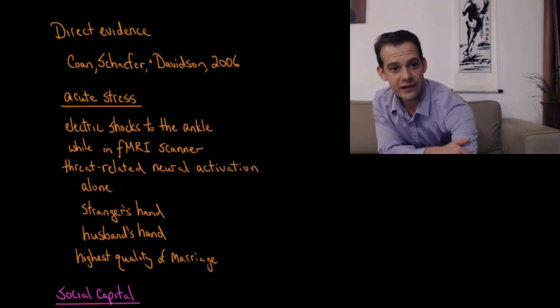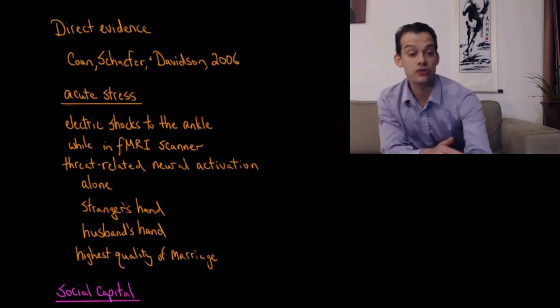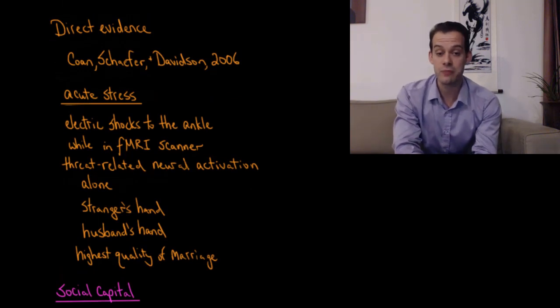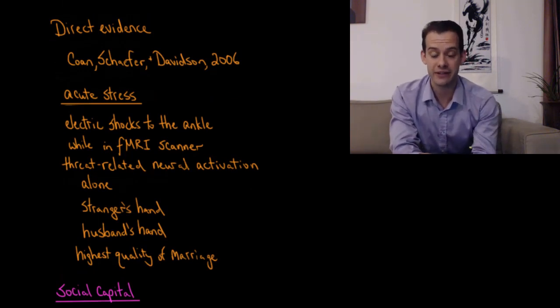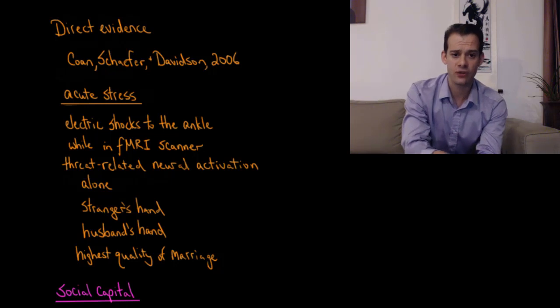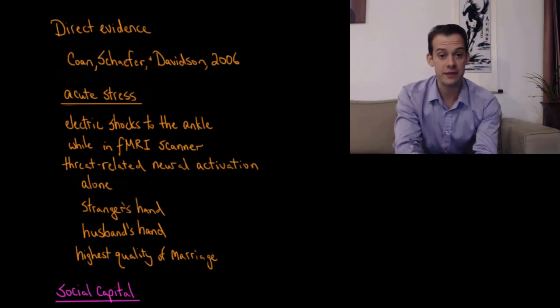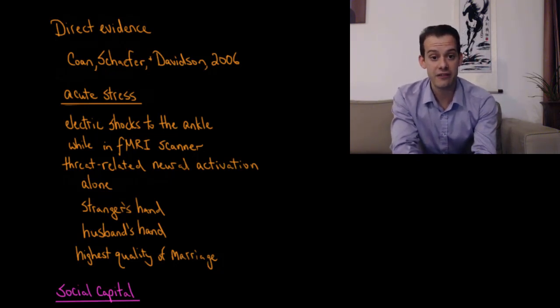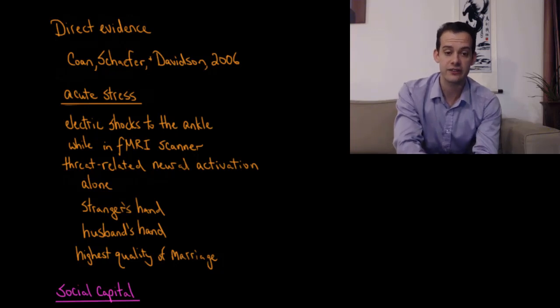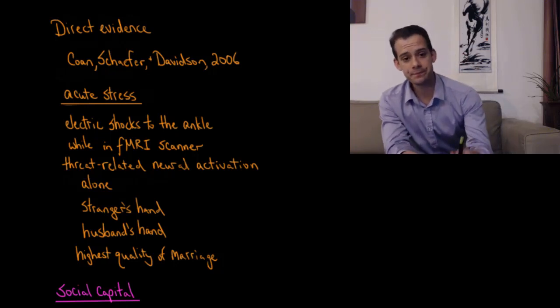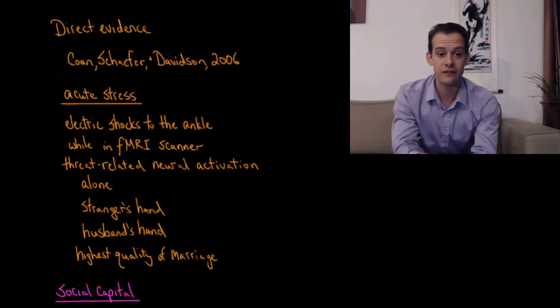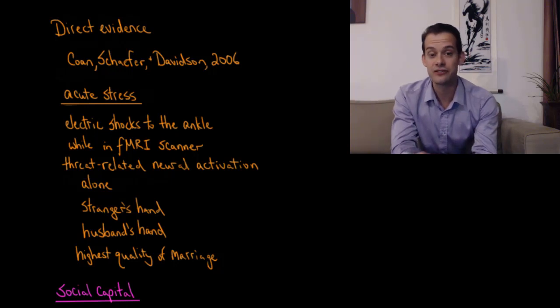So all of this makes it very difficult to assess just how much social support is related to people's ability to manage their stress. But we do have some direct evidence from laboratory studies. And so one example of this comes from a study by James Cohen, Hilary Schaefer and Richard Davidson in 2006. And so what they did was they had a simple stressor of an electric shock to be delivered to a woman's ankle while she's in an fMRI scanner.